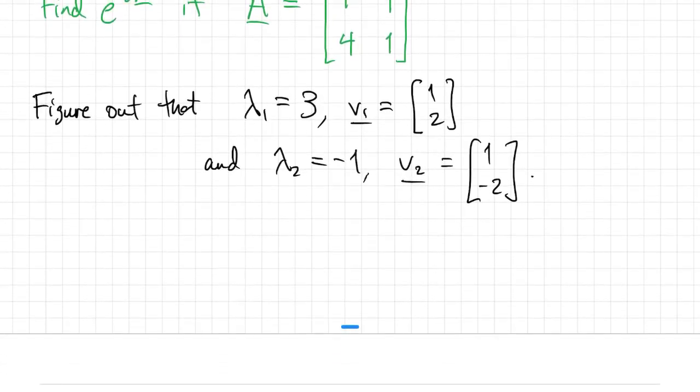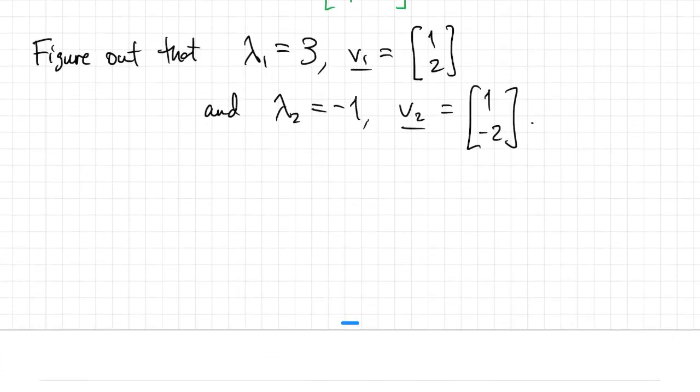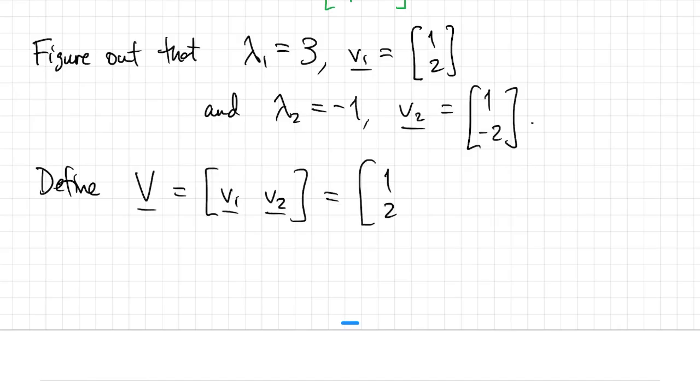We'll let V be the matrix of the two eigenvectors. And now we just compute the inverse of V, which we'll need for the formula. We have our little two by two inverse computation, which we know how to do pretty easily.